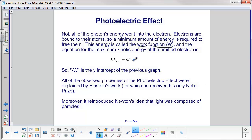And the equation for the maximum kinetic energy of the emitted electron is KE max equals hf minus W. Now let's look at what that looks like in terms of our old graphing skills. y equals mx plus b. m is the slope of the line, so that's going to be h. b is the y-intercept, which is going to be W. So minus W is the y-intercept of the previous graph.